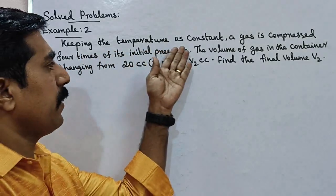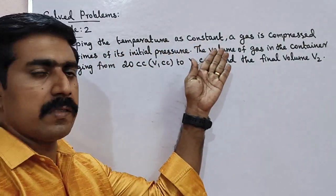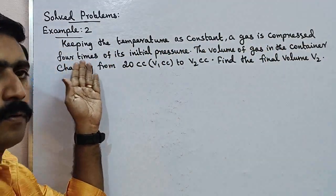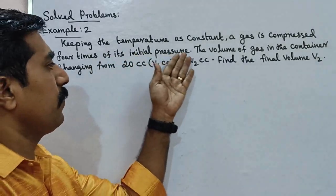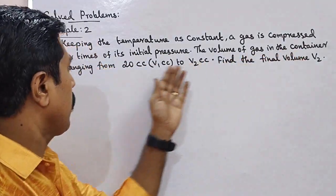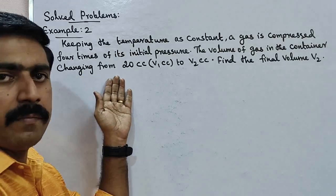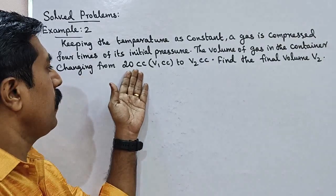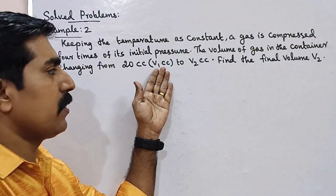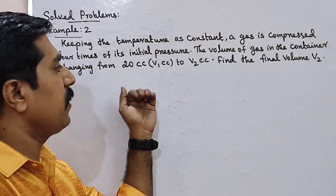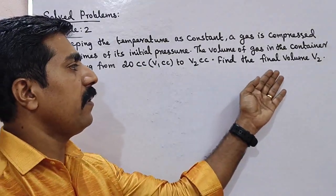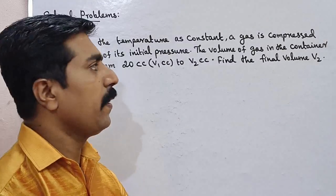Keeping the temperature constant, a gas is compressed to four times of its initial pressure. The volume of the gas in the container changes from 20 cc — where cc is cubic centimeter — from V1 cc to V2 cc. Find the final volume V2.